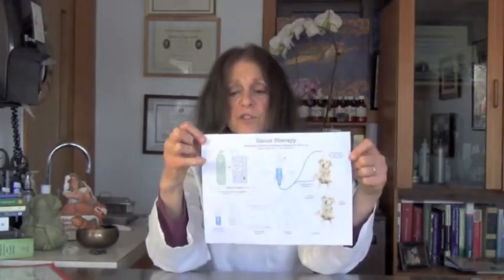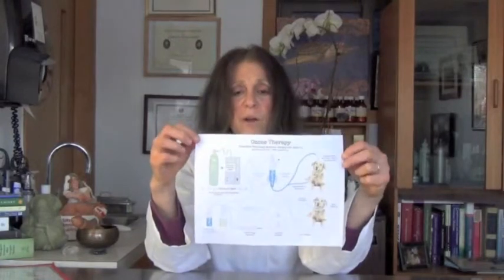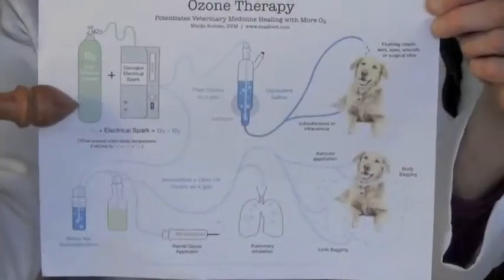When we give ozone therapy, we can deliver it in many different ways. The most common way that we utilize it here is through a subcutaneous saline injection. If I take this chart and show you, we take pure surgical oxygen over here and put it through an ozone generator. We have an oxygen cylinder.